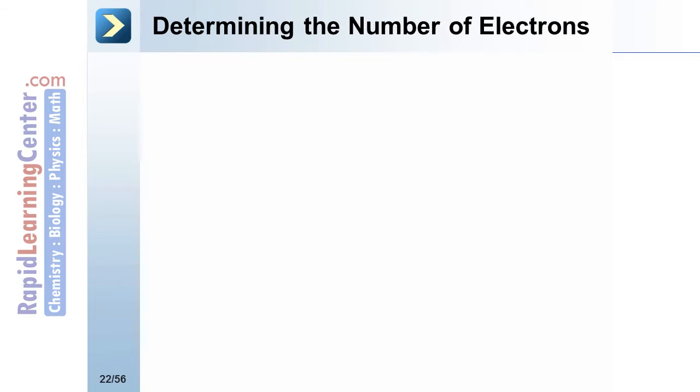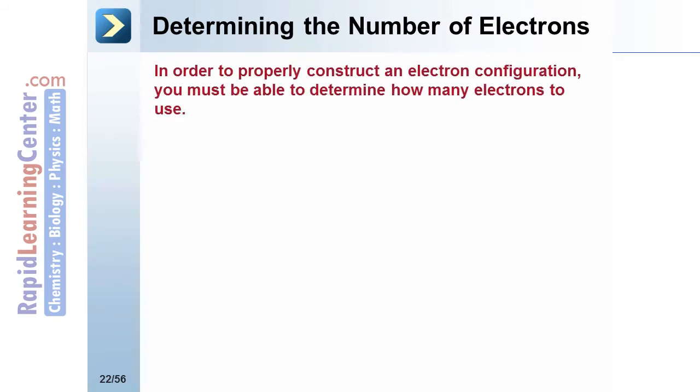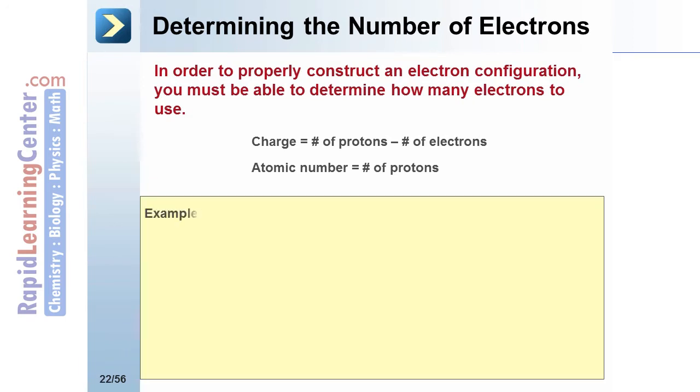How do you know how many electrons to place in a configuration? The charge is the number of protons minus the number of electrons. The atomic number gives the number of protons. Therefore, the charge is the atomic number minus the number of electrons.